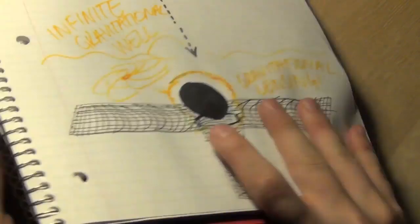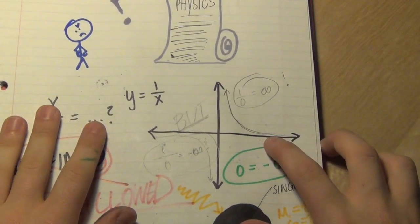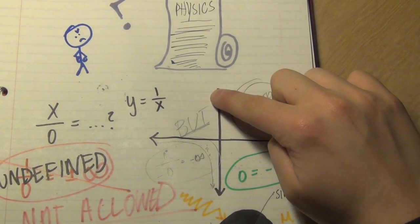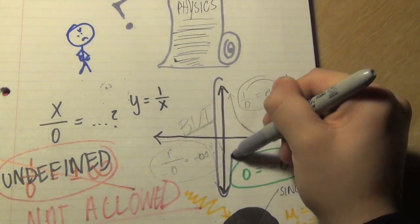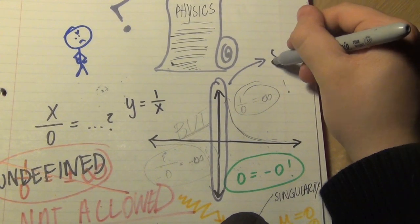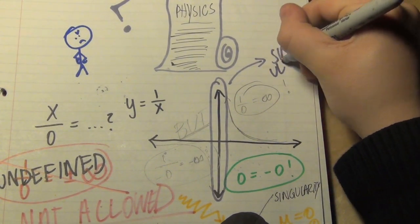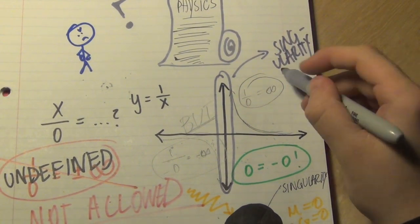To imagine this, go back to the graph where we proved that dividing by zero isn't allowed. That is how I imagined the well looking. As you get close to the black hole, the slope of the gravitational well approaches infinity, but once you actually hit the singularity, that would be the equivalent of dividing by zero. Colliding with this singularity would be undefined.